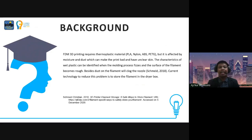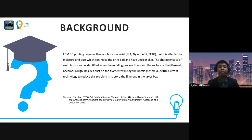The current technology to reduce this problem is to store the filament in a dryer box. However, this storage has several drawbacks: it is less efficient and practical, because a box can only accommodate one roll of plastic filament, whereas 3D printing requires more filament of different colors.